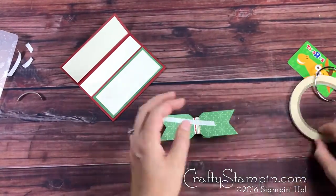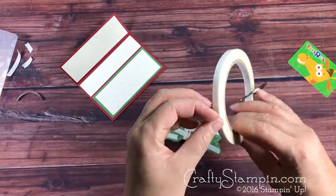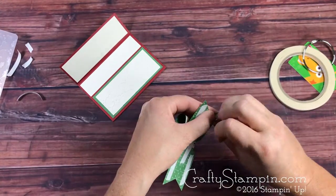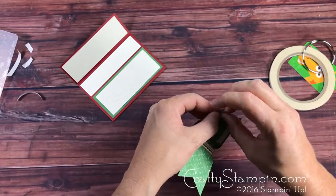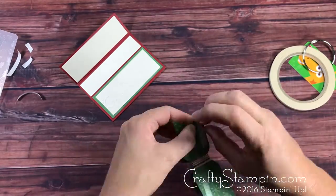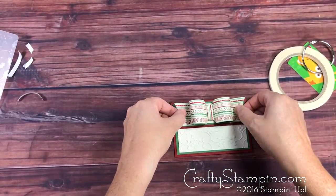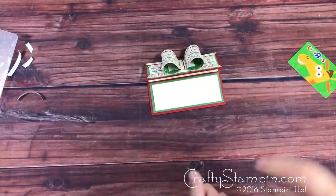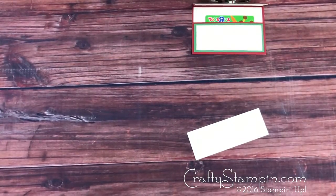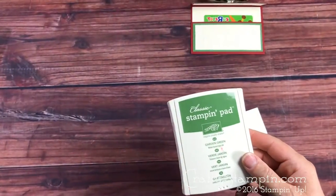We're using tear tape to attach the bow to the front of the card. Attach the bow to the center of the top section of the gift card holder.